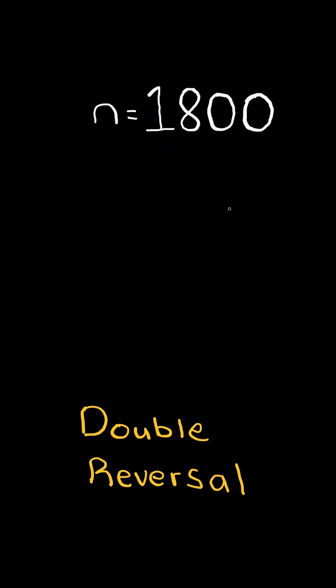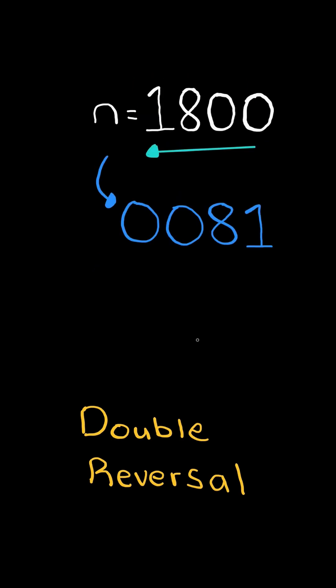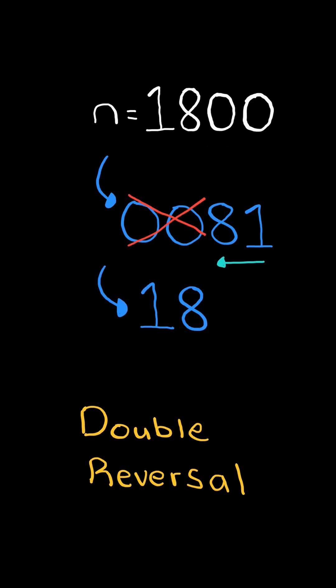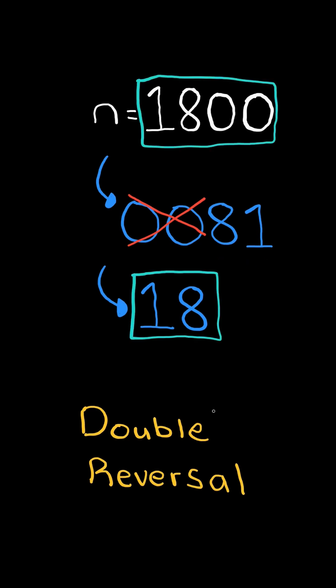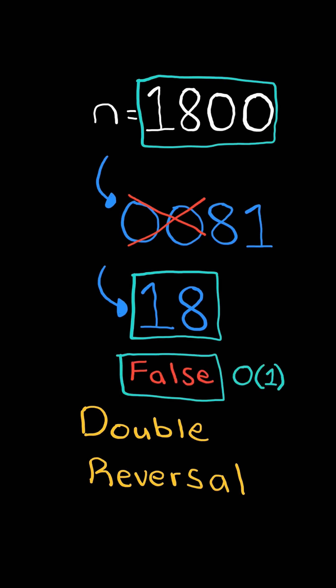Consider n equals 1800. Reversing the digits gives us 0081, but we do not count leading zeros. Reversing the number a second time gives 18. The double reversal does not equal the original number, so we return false.